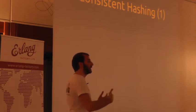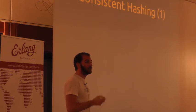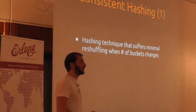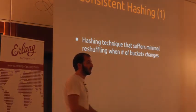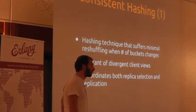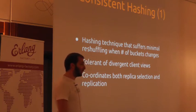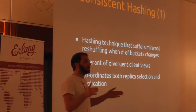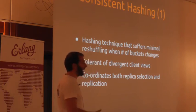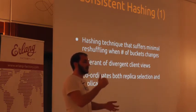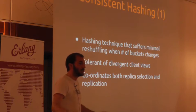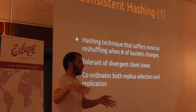Consistent hashing is a technique that allows you to do a minimal amount of reshuffling of data stored on that ring state. It's tolerant to divergent client views and coordinates both replica selection and replication. This is what we call tunable consistency. In a SQL database such as Oracle, MySQL, or Postgres, all those engines are ACID compliant — they enforce ACID compliancy by introducing locking mechanisms during that write process, coordinating a sequence of events before flushing to disk.